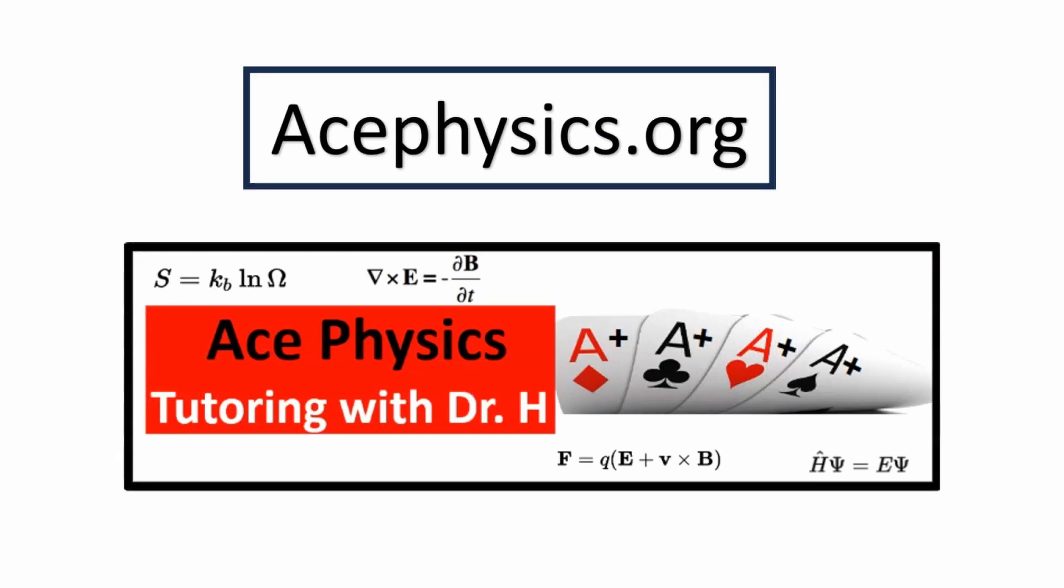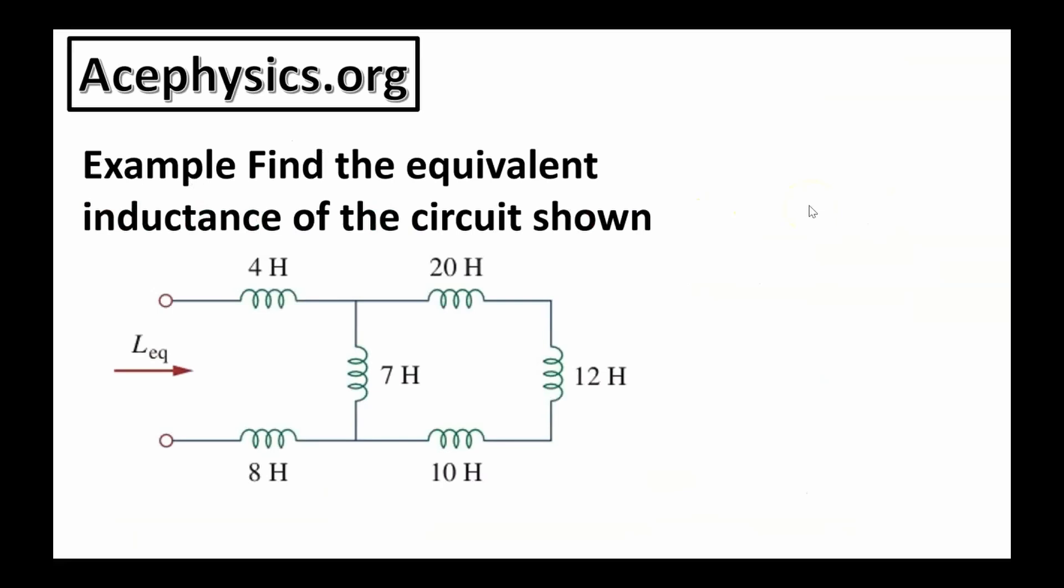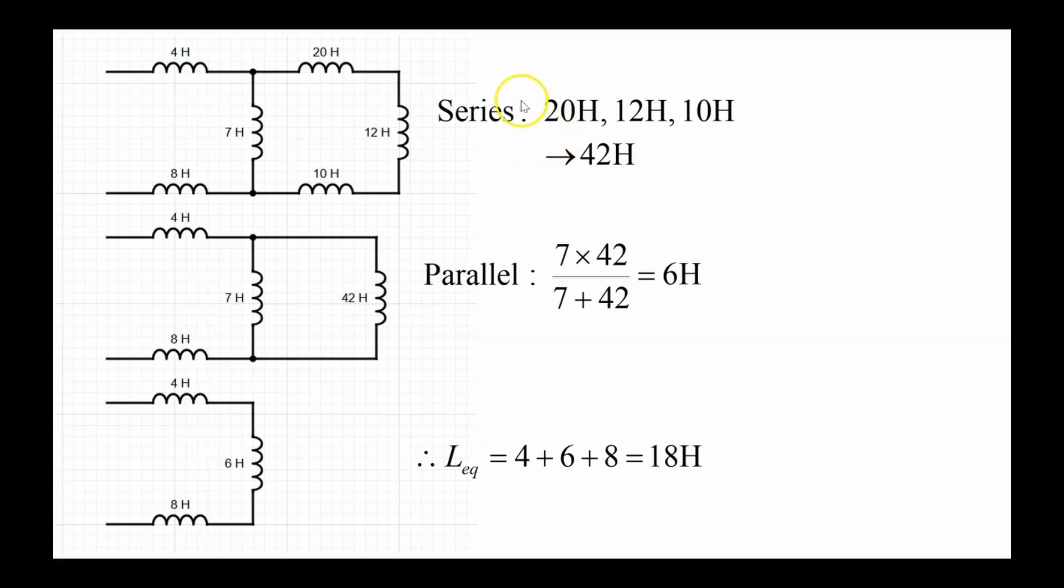Acephysics.org, math and physics tutoring with Dr. Hudis. And here's an example. It says find the equivalent inductance of the circuit shown in the schematic. And here's the solution. First, you notice that these three inductors are in a series combination, and so you can add them all up.